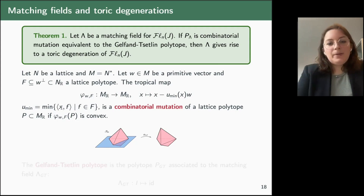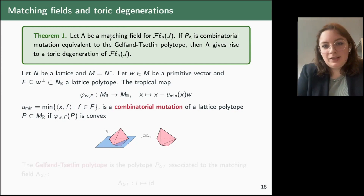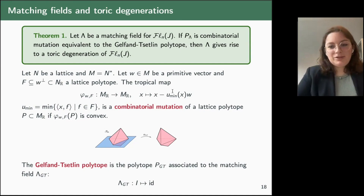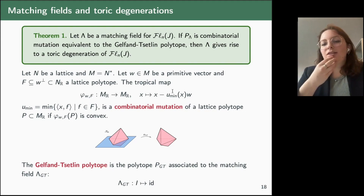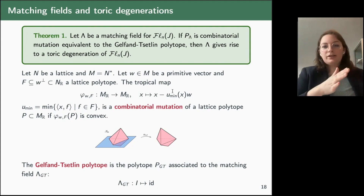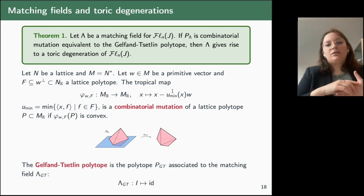The Gelfand-Zetlin polytope has many different definitions, but in this context we define it as the polytope associated to the matching field which associates to each subset the identity permutation.